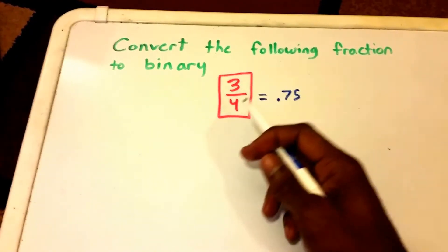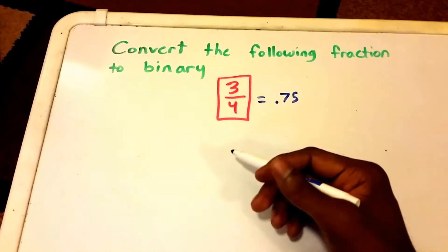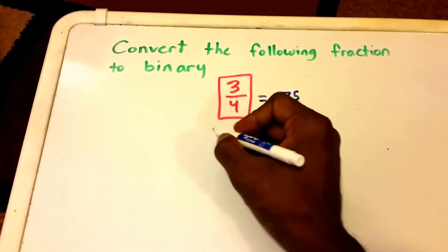So we can really use either form to determine the binary digit for this but we're just going to use the fraction form. So let's go ahead and get started.